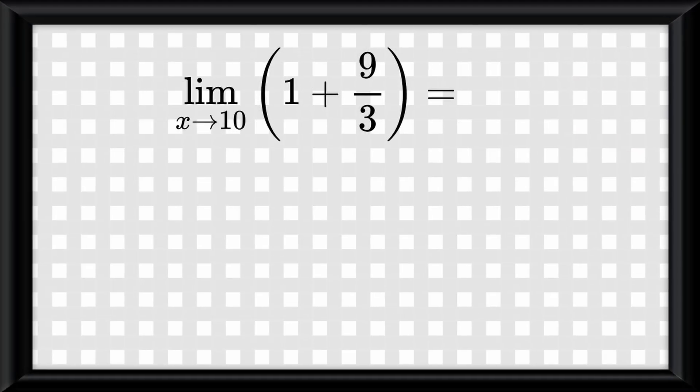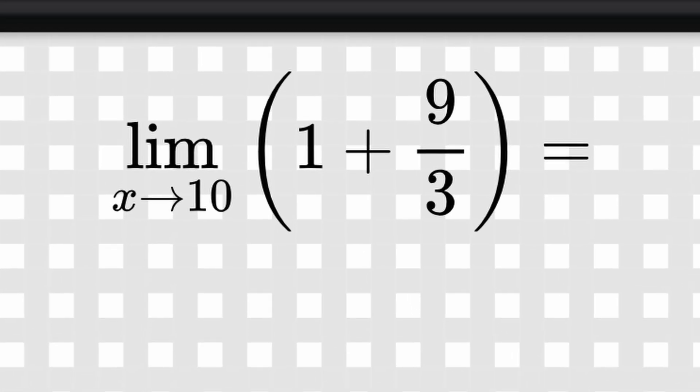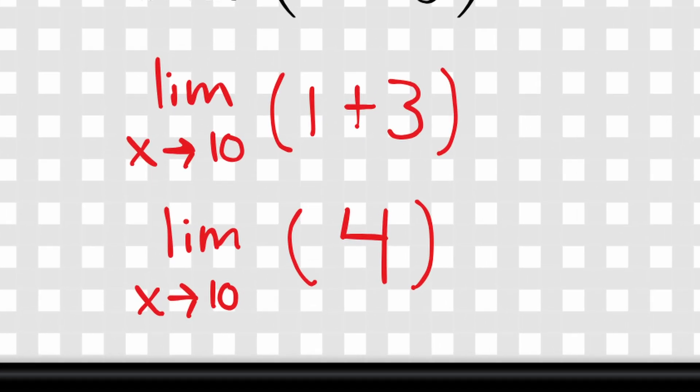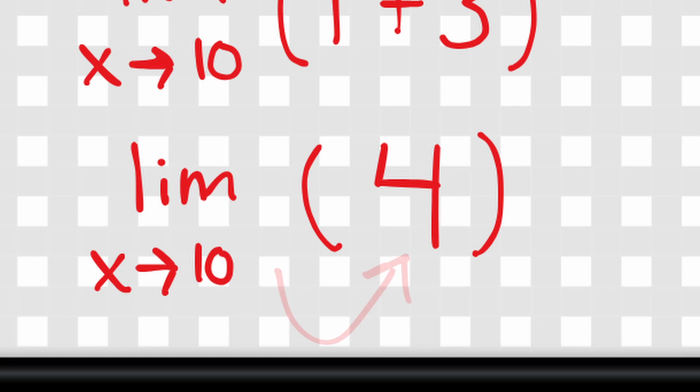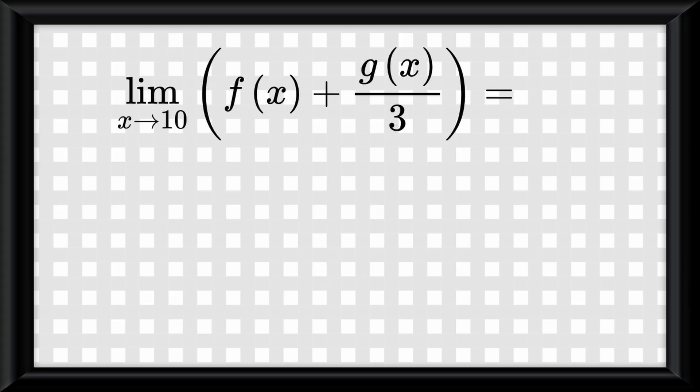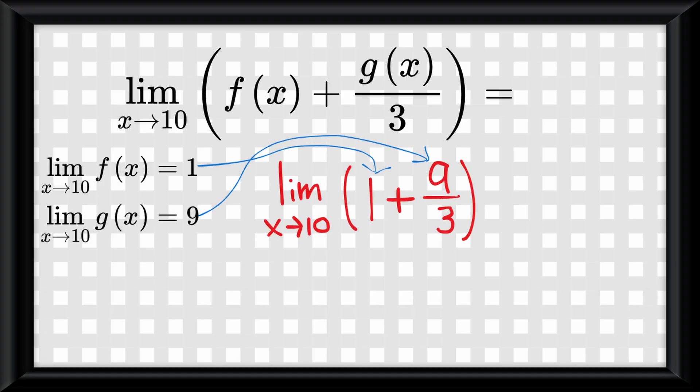What about this problem? The limit as x approaches 10 of 1 plus 9 over 3. Solving the parentheses, we get 4. And remember, the limit of a constant is a constant, so the answer is just simply 4. If we were to manipulate this as being the limit as x approaches 10 of f of x plus g of x over 3, where the limit as x approaches 10 of f of x equals 1, and the limit as x approaches 10 of g of x equals 9, the answer would still be the same because we'd just be plugging in the same values.